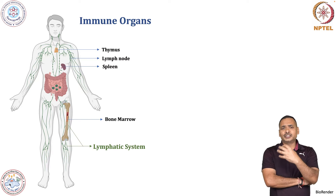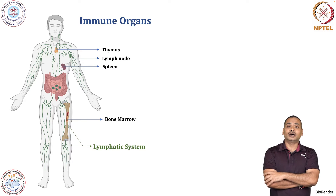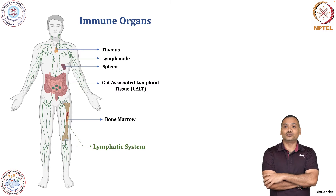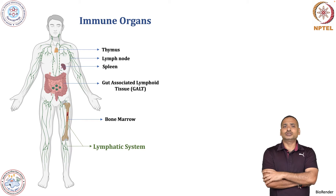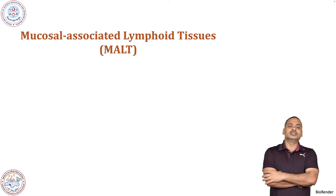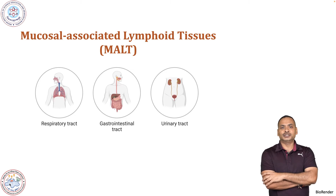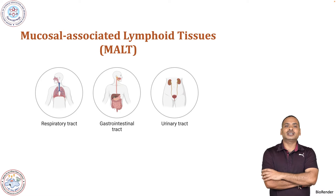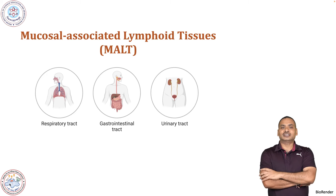These lymphoid tissues or lymph node-like tissues are present in our gut and we call it the gut-associated lymphoid tissues. These lymphoid tissues are also present in the mucosal area and we call it the mucosal-associated lymphoid tissue, which is predominantly present in the respiratory tract, gastrointestinal tract, and urogenital tract.